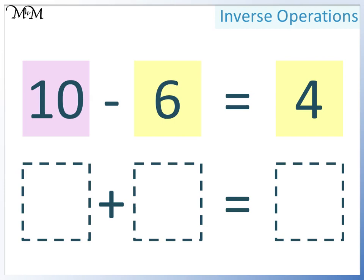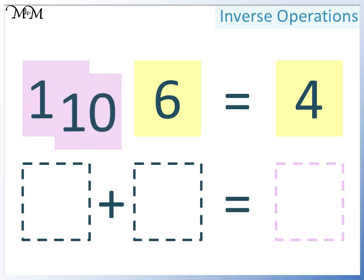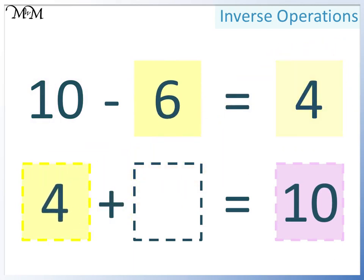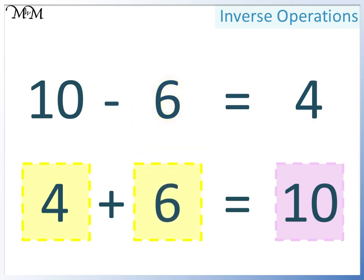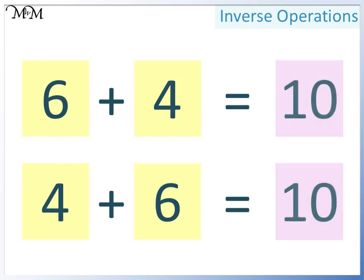Here is the second way that we could write this as an addition. Two smaller numbers add to make a larger number. The largest number that we have is 10, so it will go here. In this space we can have either of the two smaller numbers — this time we will have 4, and in this space we will have 6. 4 plus 6 equals 10. So we have 6 plus 4 equals 10 and 4 plus 6 equals 10. The order of the two smaller numbers doesn't matter because they still add together to make 10.